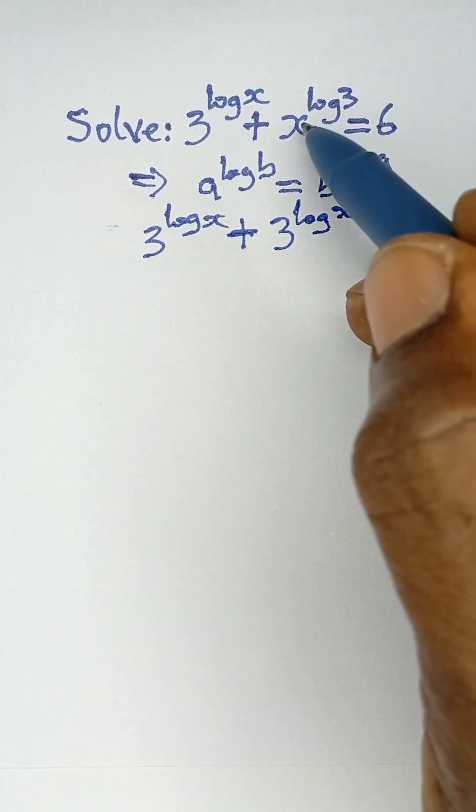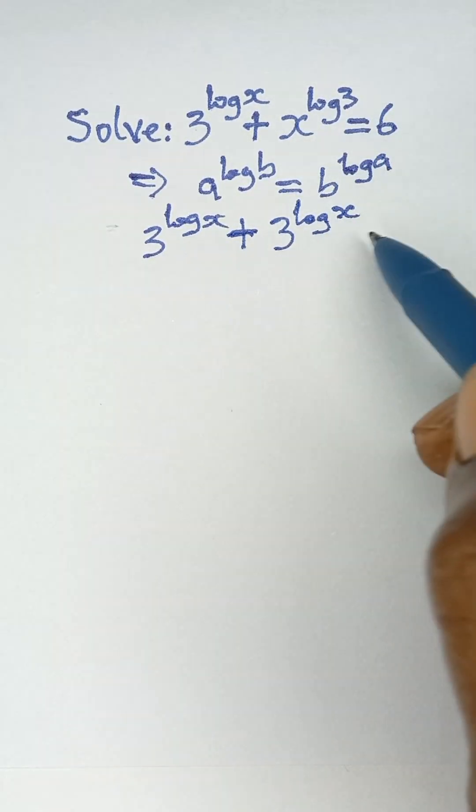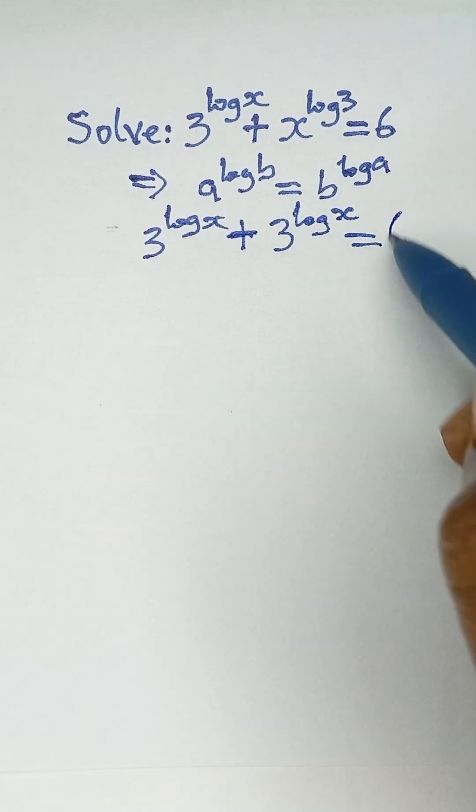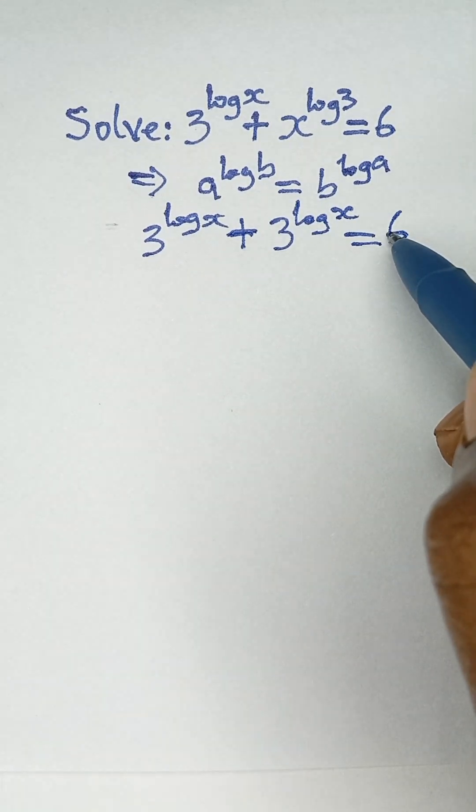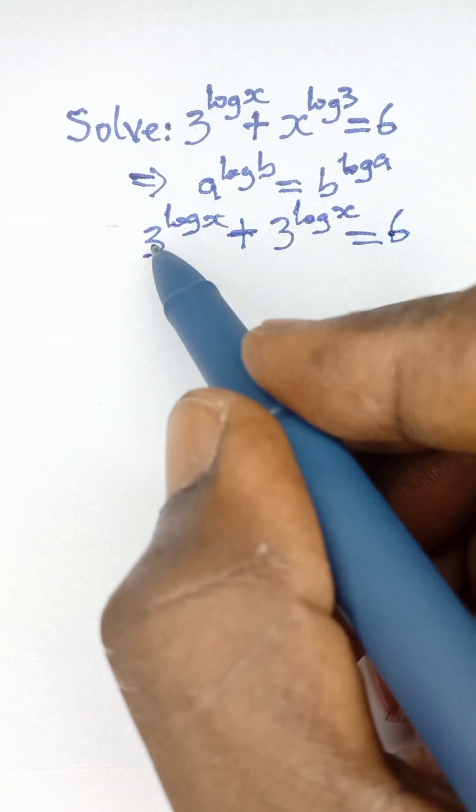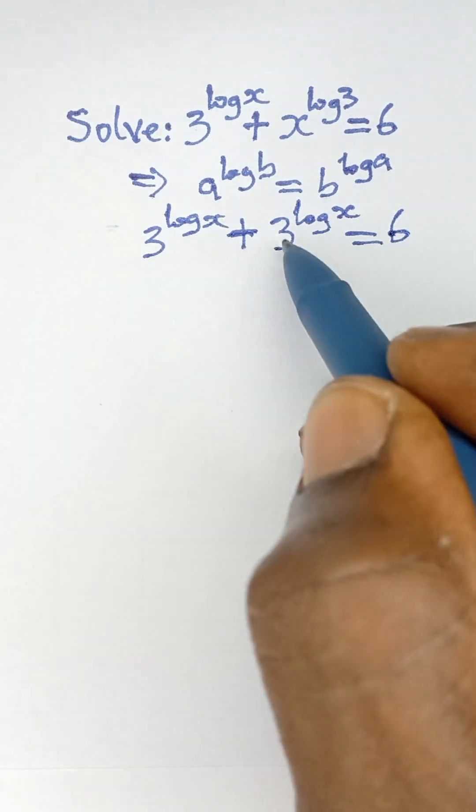To simplify this, we add these two terms since they are like terms, giving us 2 times 3 raised to the power log x equals 6.